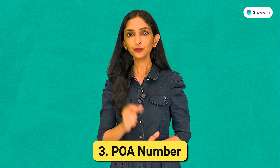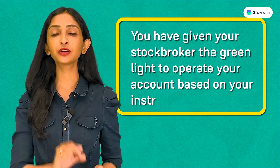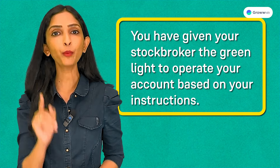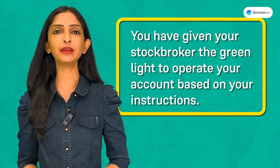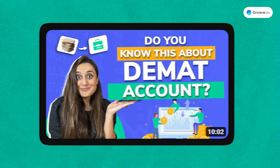Lastly, the POA number. This is part of the power of attorney agreement — it simply means you have given your stockbroker the green light to operate your account based on your instructions. Once everything is set up, you'll receive a unique login ID and password. If you want to know how to open a DMAT and trading account, you can check out the linked video.